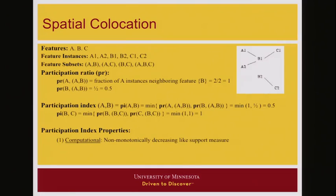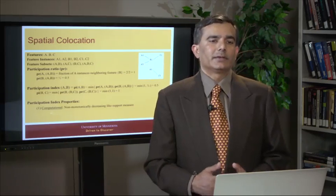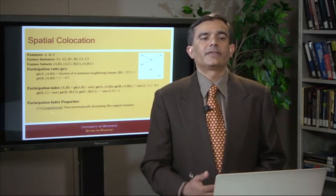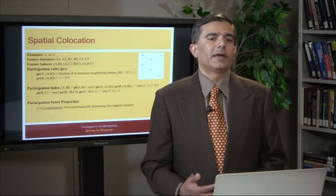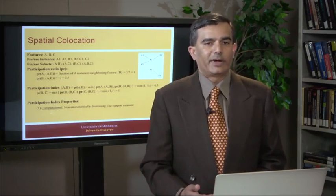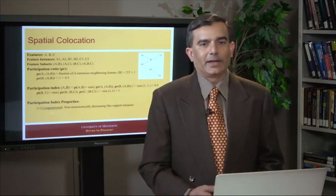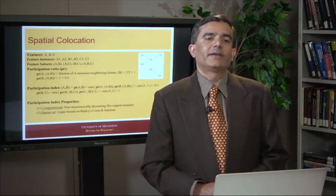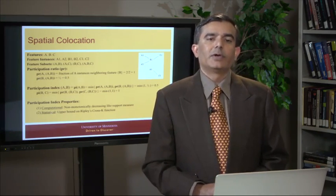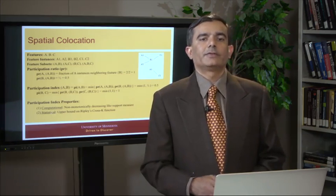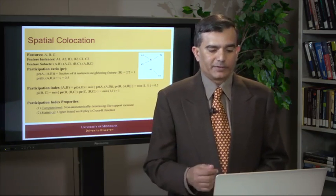Now, participation index has two very interesting property. The first property is that it has the similar property as support. So computationally, once you find a pair which falls below the threshold for participation index, you can quickly rule it out. You don't need to form triples and subsets of 4 out of it because they are not going to have any higher participation index. So it has this nice computational property which gives you a priority-like algorithm. But it also has a nice statistical property. It is an upper bound on cross K function. And because of that, you can make statistical sense out of it in terms of the result.